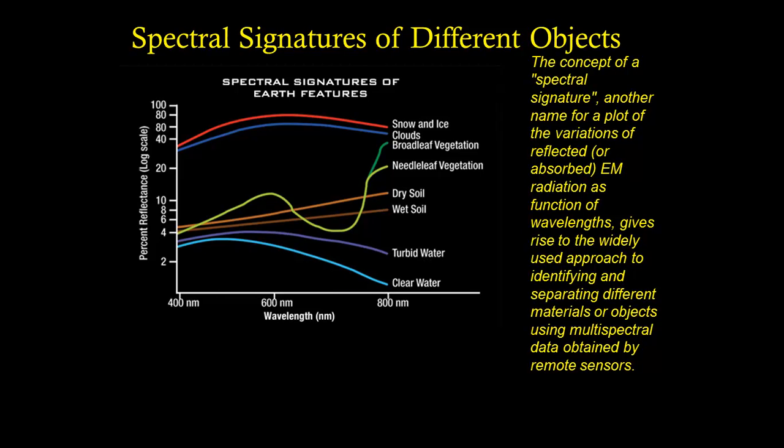The concept of spectral signature is another name for the plot of the variations of reflected or absorbed electromagnetic radiation. Here we have another curve showing wavelength on the x-axis and percent reflectance on the y-axis. And you can clearly see that at the very top,